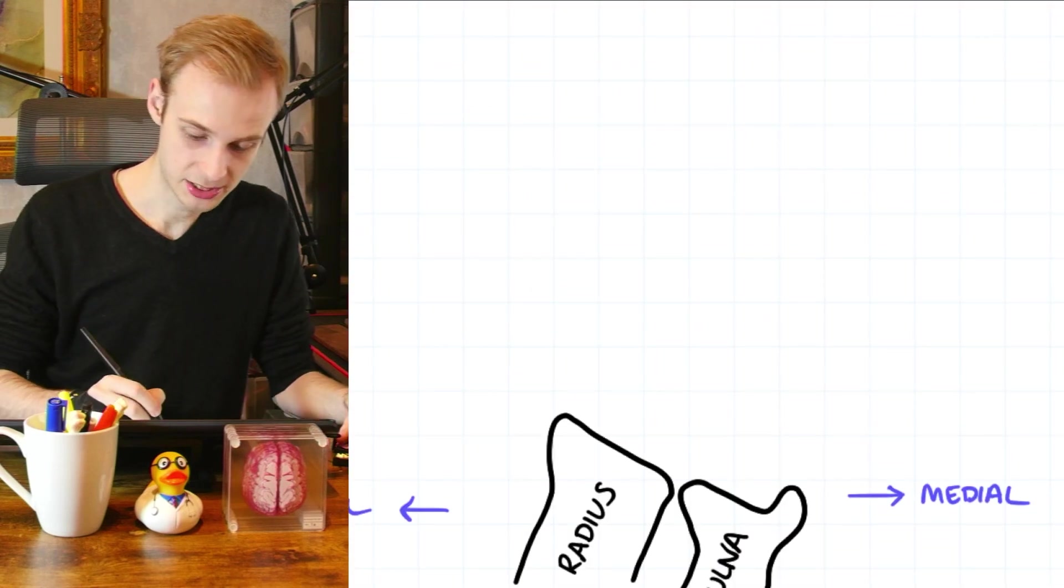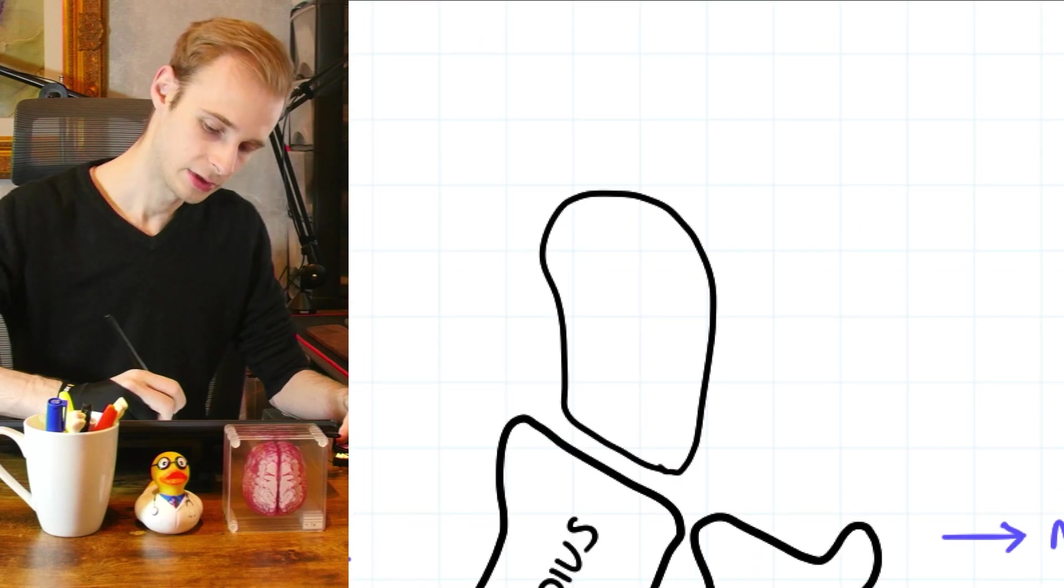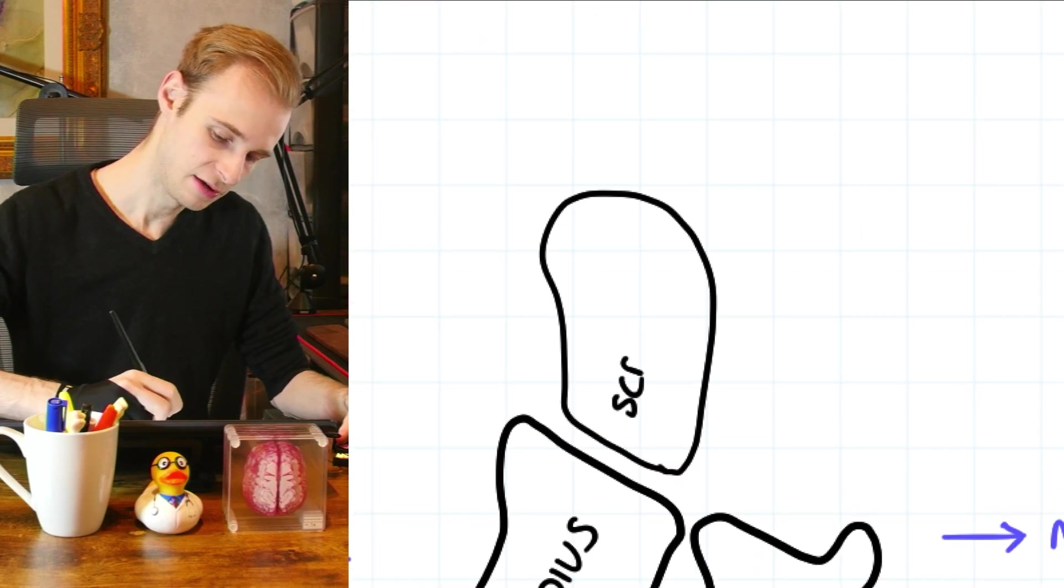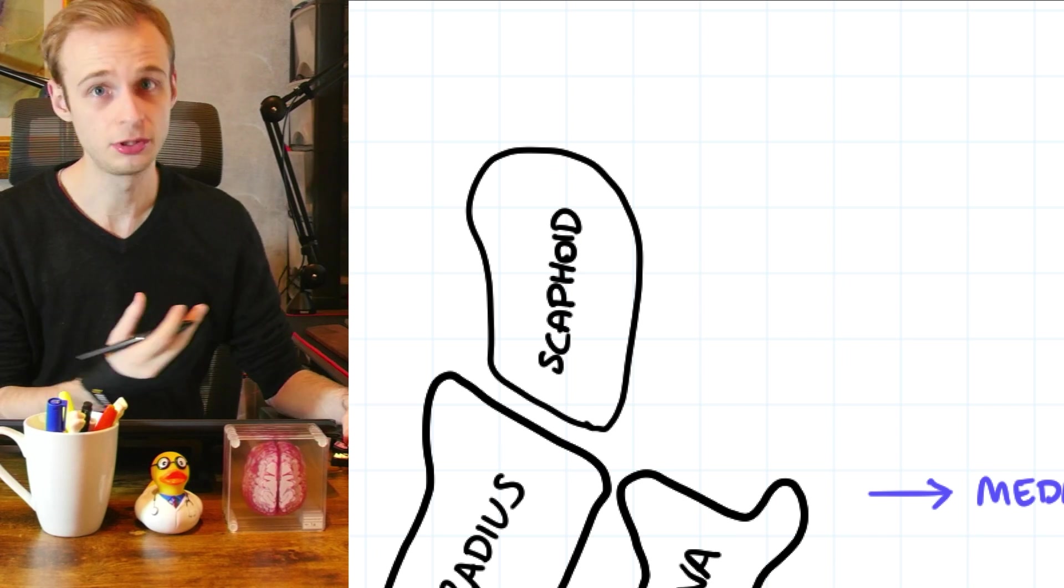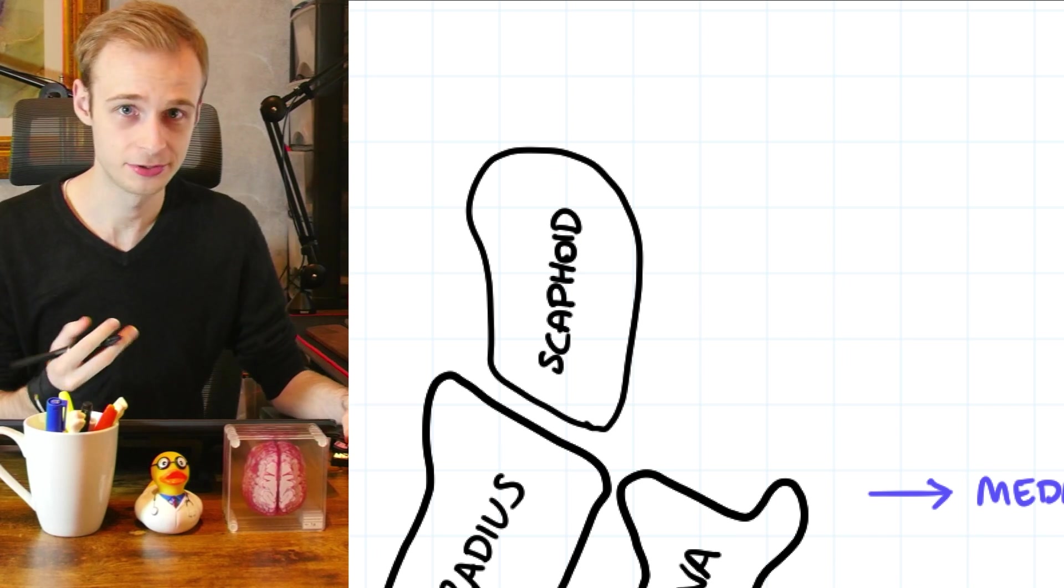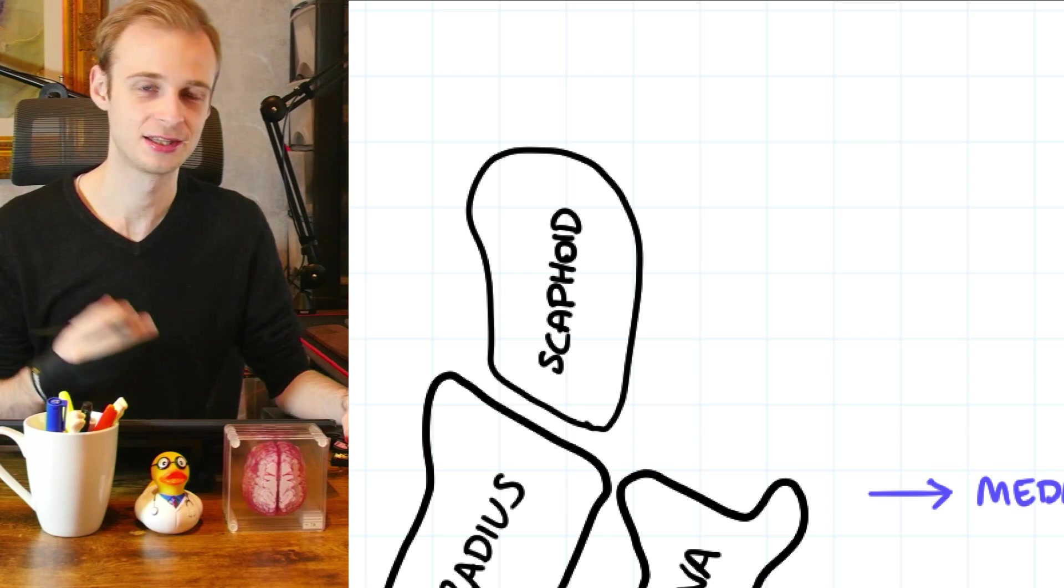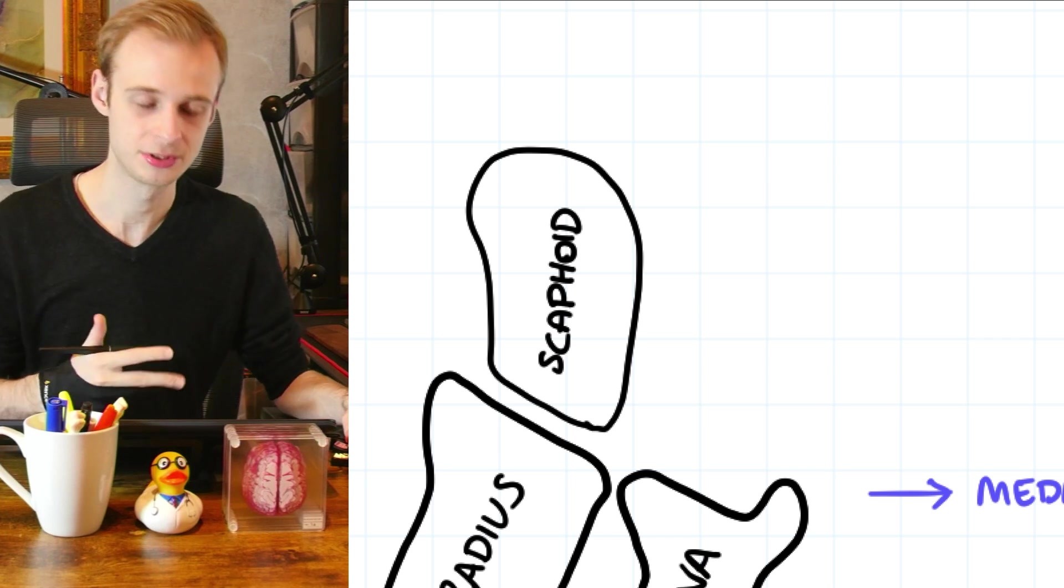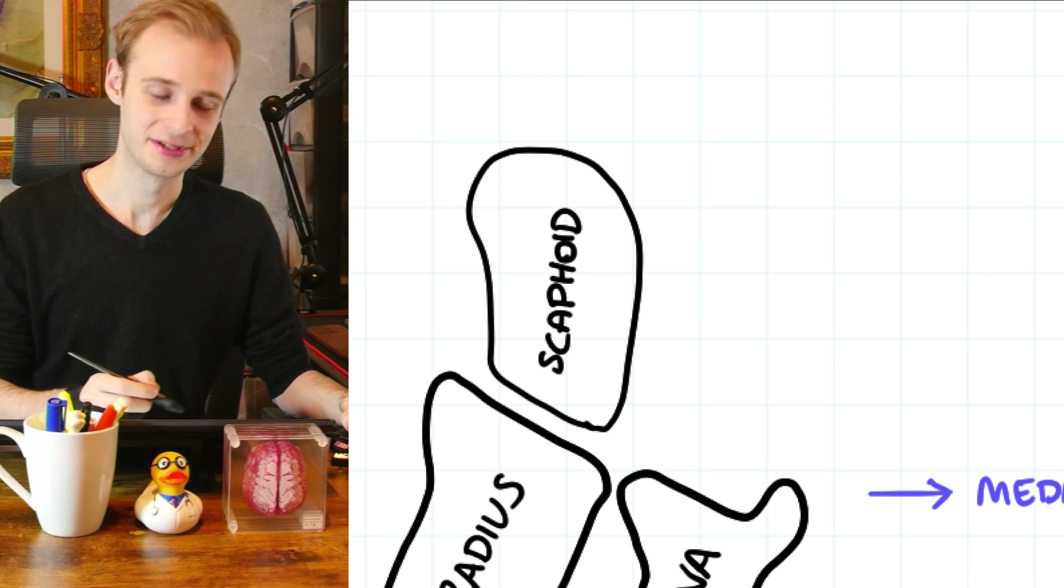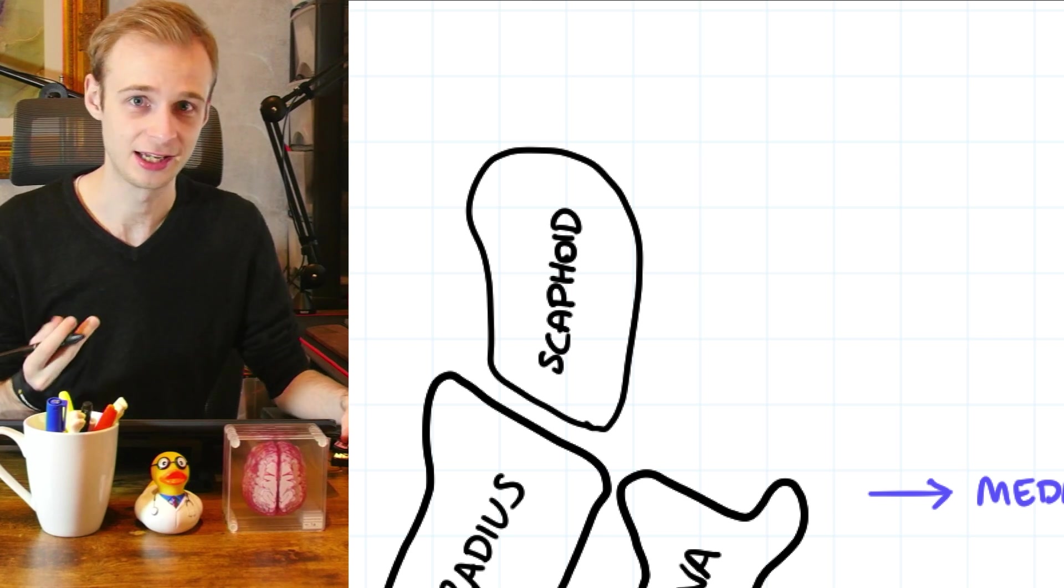So let's start with our wrist bones. The first one that we're going to draw in down here is scaphoid. So this is the most proximal and the most lateral of the carpal or wrist bones. Very old texts refer to it as the navicular bone of the hand. The navicular bone is a similar bone in the foot named navicular because it looks like a sailing boat.